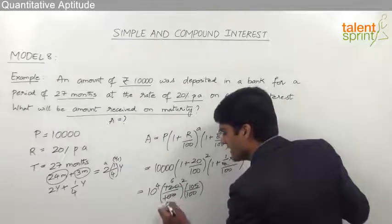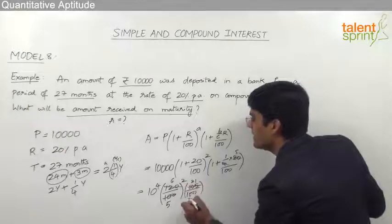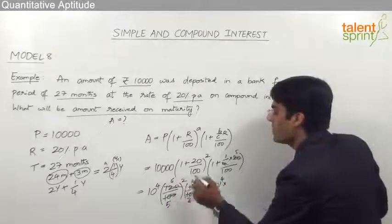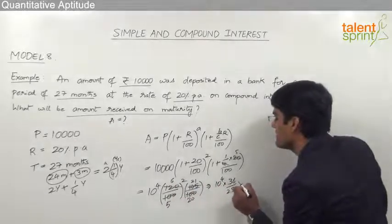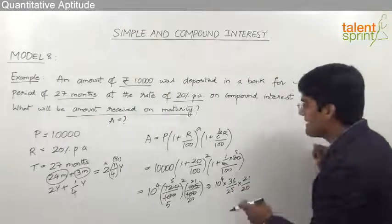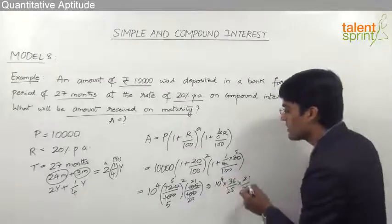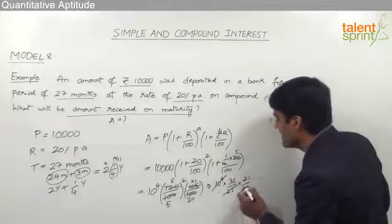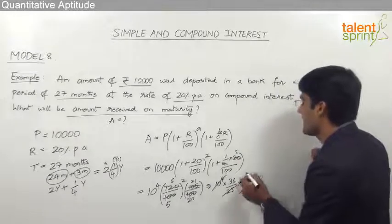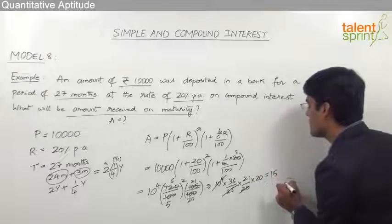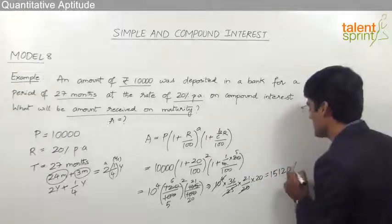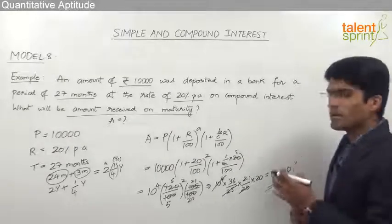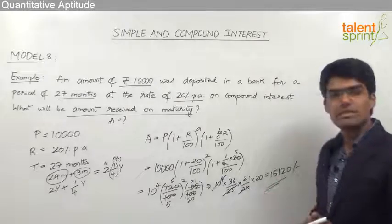Now, 120/100 = 6/5 and 105/100 = 21/20. So the expression becomes 10,000 × (6/5)^2 × (21/20) = 10,000 × (36/25) × (21/20). Since 10,000 ÷ 500 = 20, this simplifies to 36 × 21 × 20 = 15,120. So the total amount received on maturity is ₹15,120. Use the formula and do the proper calculation to get the required answer.